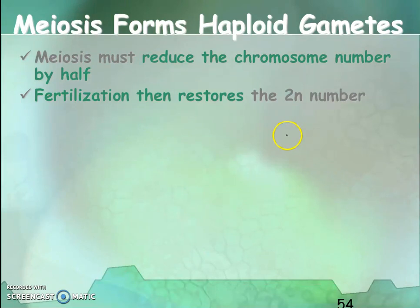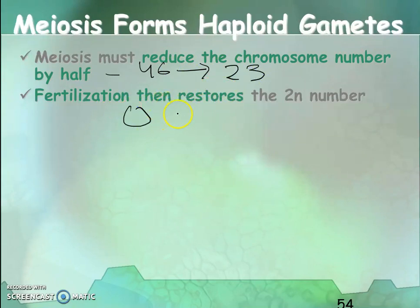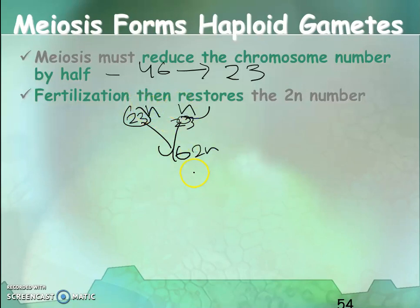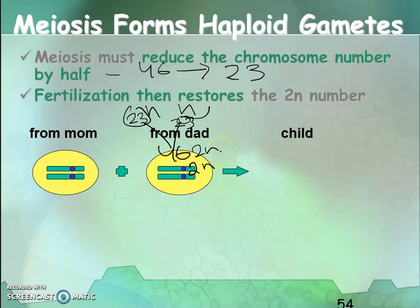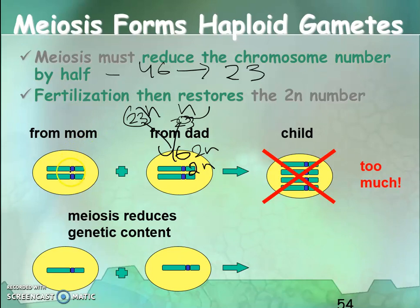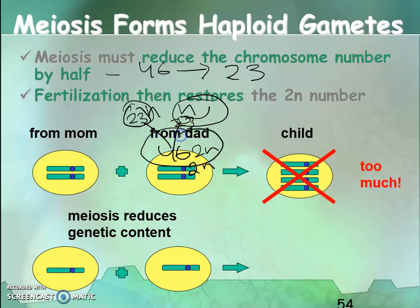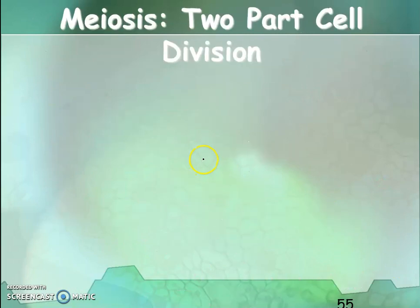Meiosis is necessary to reduce the chromosome number by half. In humans, 46 reduces to 23. Then fertilization from an egg and a sperm of 23 each makes 46 and restores the 2N diploid number. One comes from your mom as the egg and the sperm comes from your dad, which makes a diploid number of 46. In the next video I am going to discuss the stages of meiosis.